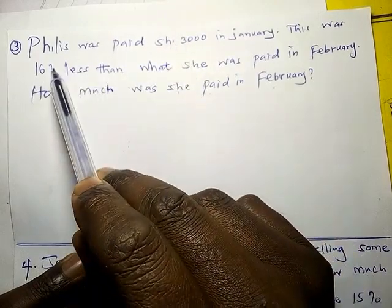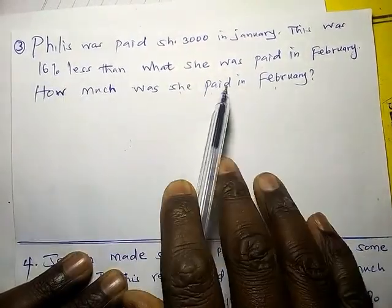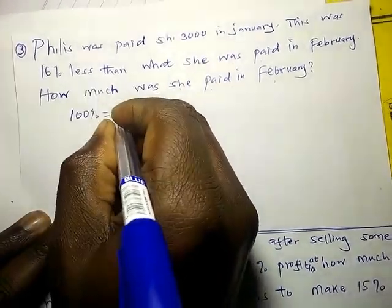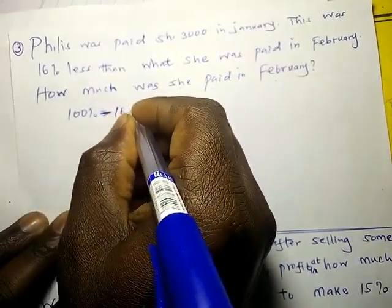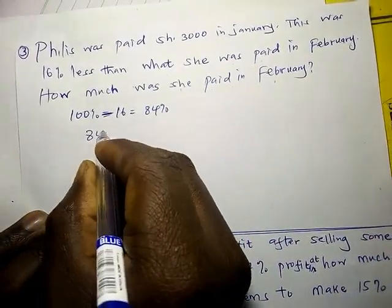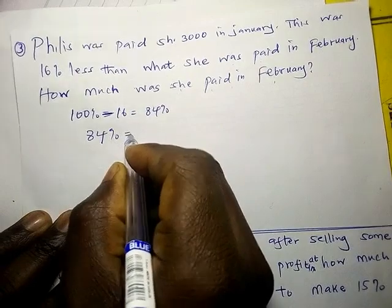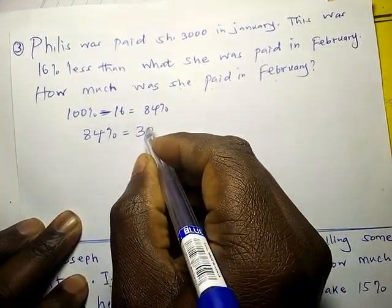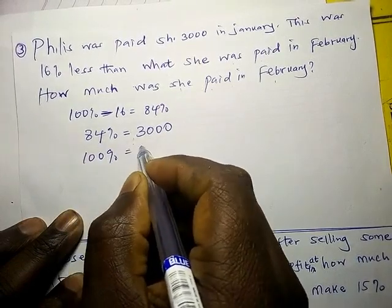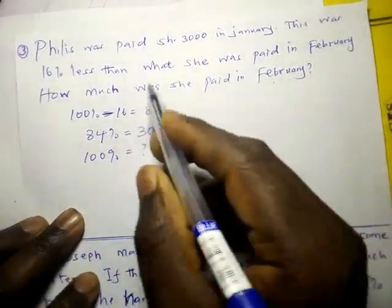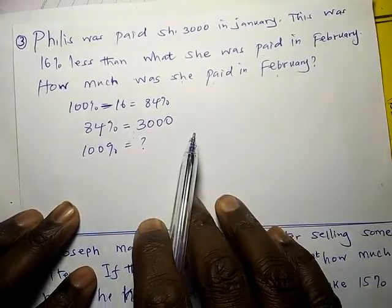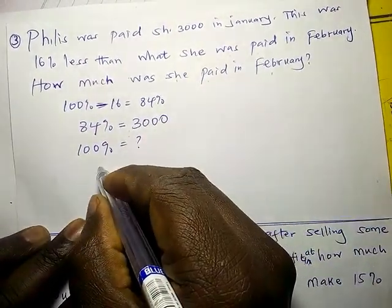If the original February amount is 100%, then 3000 represents 100% minus 16%, which is 84%. So 84% represents 3000 shillings. We ask: 100% will be what? This tells us the original amount before the 16% decrease.